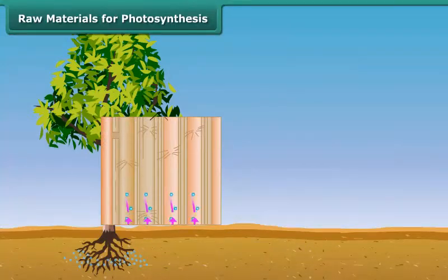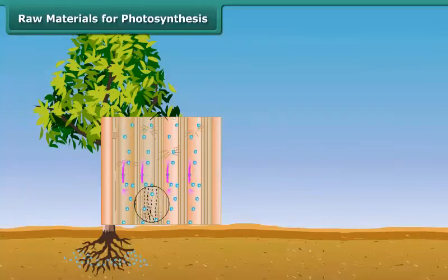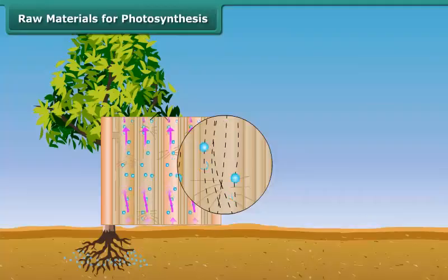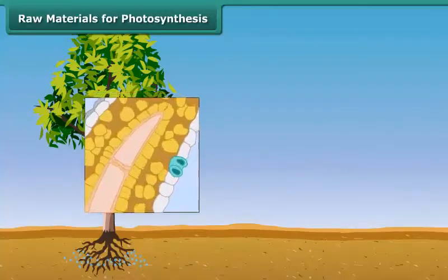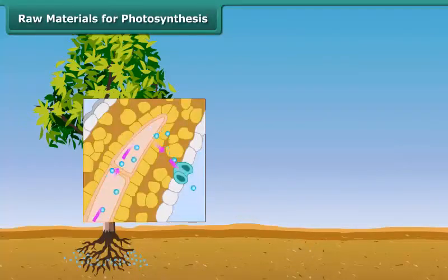These vessels run throughout the root, the stem, the branches, and the leaves. They form a continuous path or passage for water and minerals to reach the leaf.